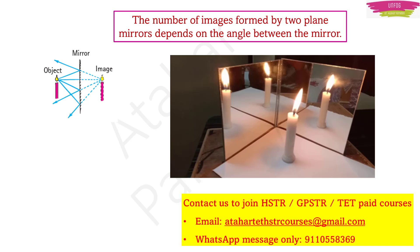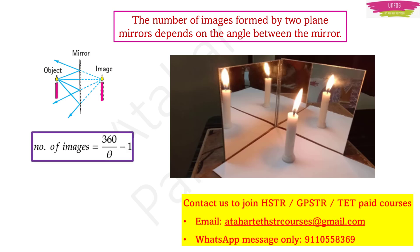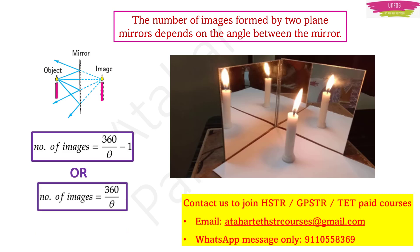The number of images formed by two plane mirrors depends upon the angle between the mirrors. There are two formulae: one is that the number of images equals 360 divided by theta minus 1, and another is simply 360 divided by theta. The doubt aspirants have is: which formula should be used when?